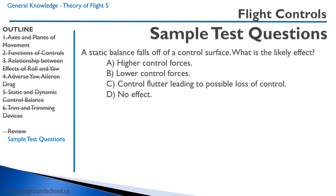Practice question: A static balance falls off of a control surface — what is the likely effect? If you recall, the purpose of a static balance is to increase the weight of a control surface to reduce flutter. Losing it could lead to control flutter and possible loss of control. The correct answer is control flutter, leading to possible loss of control.